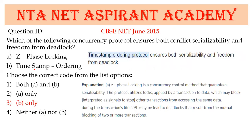Next question on concurrency control: which ensures both conflict serializability and freedom from deadlock? The right answer is B only — timestamp ordering protocol ensures both serializability and freedom from deadlock. 2PL (two-phase locking) supports serializability but leads to deadlock. This was asked in June 2015.